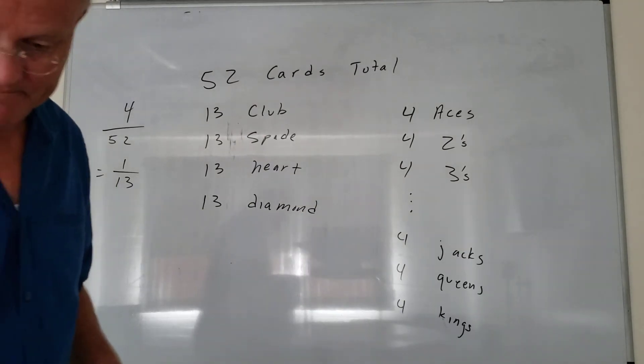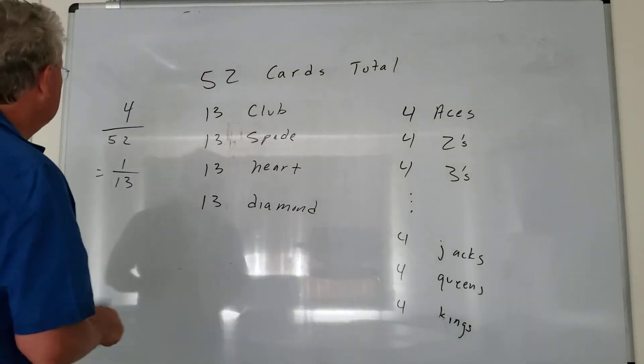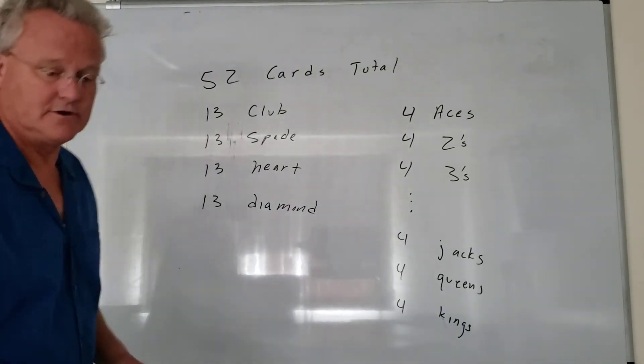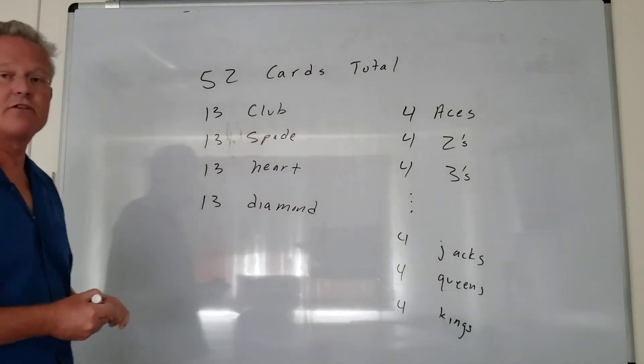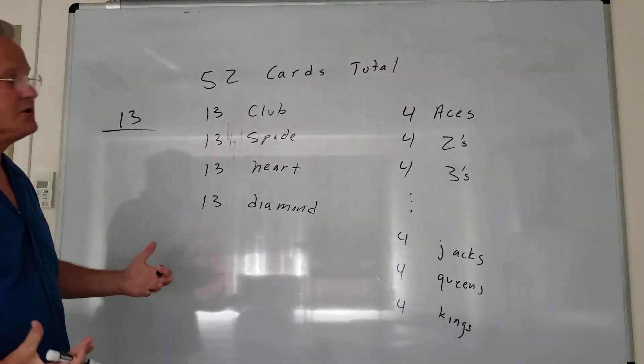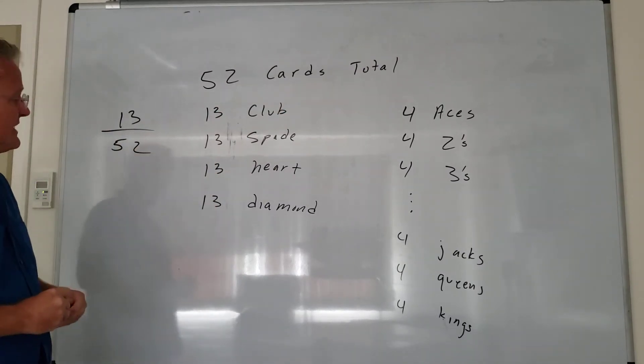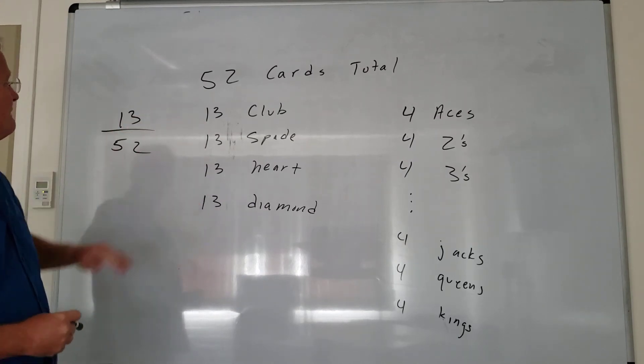Part B, we're asked what's the probability of selecting a diamond? Well, how many diamonds are there altogether? There are 13 out of the total 52 cards. So the probability of selecting a diamond is 13 out of 52.